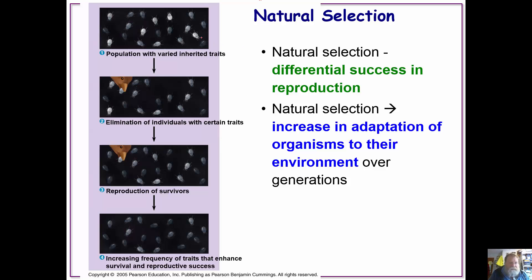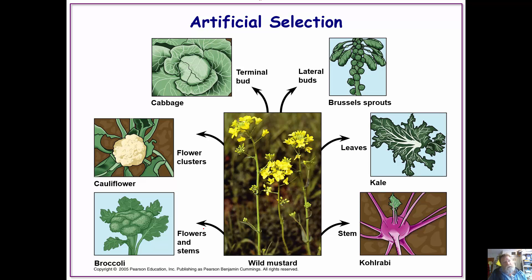For example, going from dark beetles to light beetles: a beetle that is light has genes that make it light, and a beetle that is dark has genes that make it dark. If all the light beetles get eaten, you will be left with dark beetles and the next generation will be significantly darker.